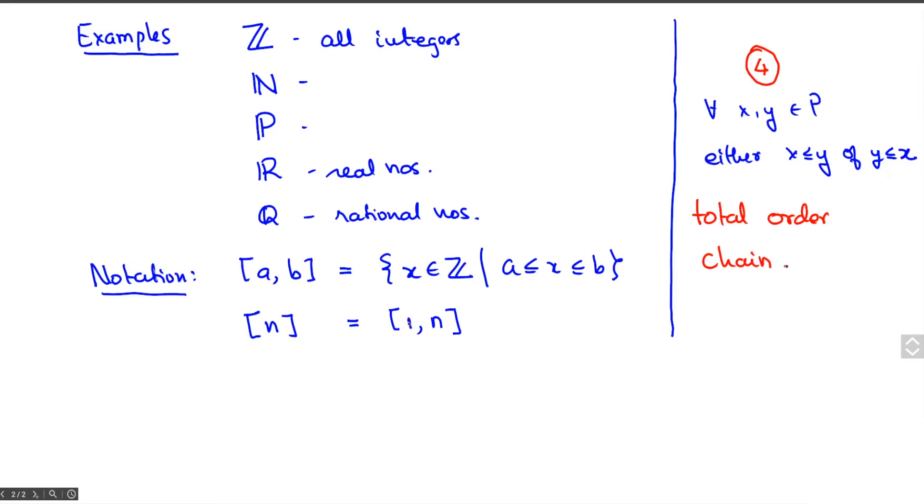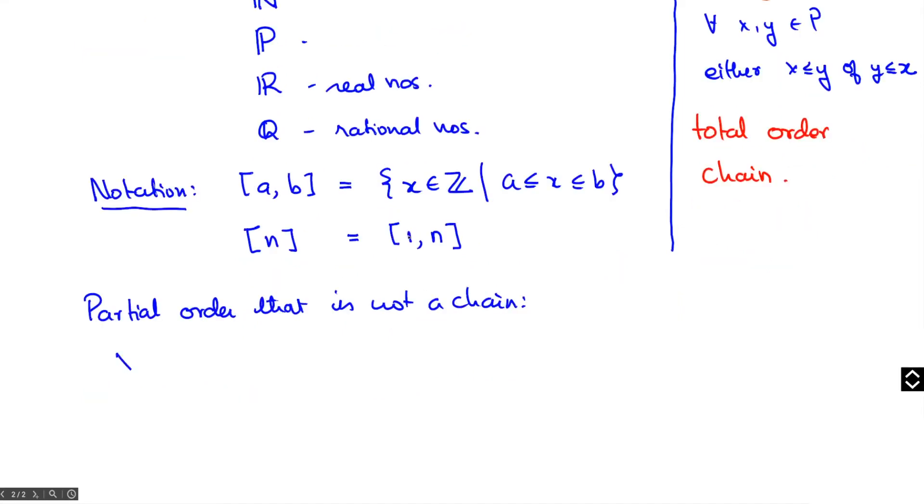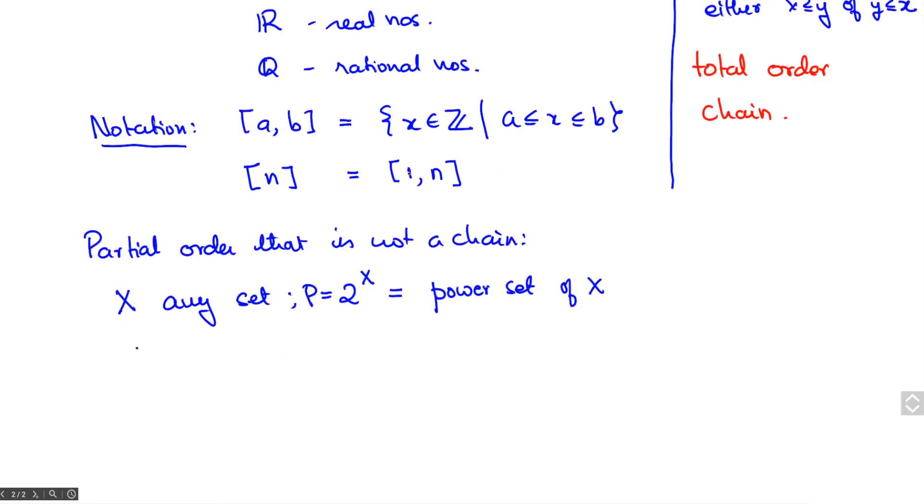Let's look at some examples of partial orders which are not chains. The most standard example is the following: you take any set X, take 2^X to denote the power set of X, and then P is a partially ordered set under the relation of containment.